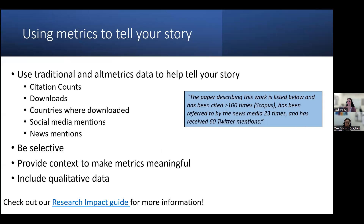The synergistic activities section is where you can use metrics to tell your stories, such as citation counts and downloads, providing context and explanation to make metrics meaningful. If your work was mentioned in a policy, explain what the policy was for and describe how your work was discussed. For example, this work was described as a breakthrough study on ALS by a prominent researcher. You could also highlight comments from news stories, mentions in policies or patents, or the work of students you have mentored.